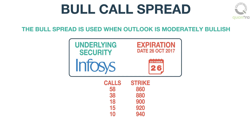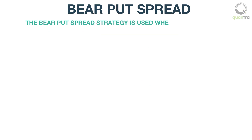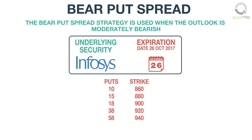The second strategy we discussed was the bear put spread. The bear put spread strategy is used when the outlook is moderately bearish. The strategy involves buying the put at a specific strike price and selling the put with a lower strike price on the same underlying security with the same expiration date.